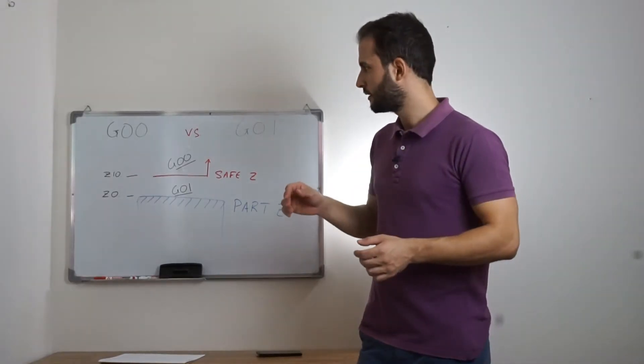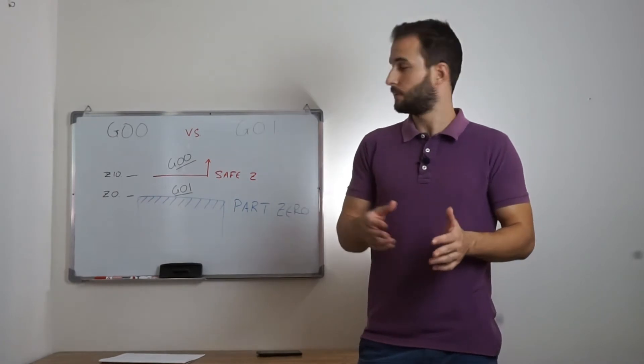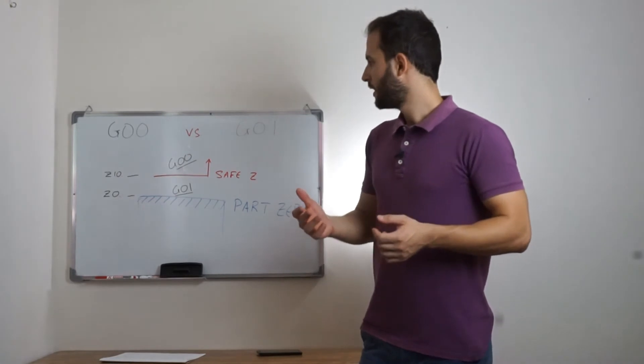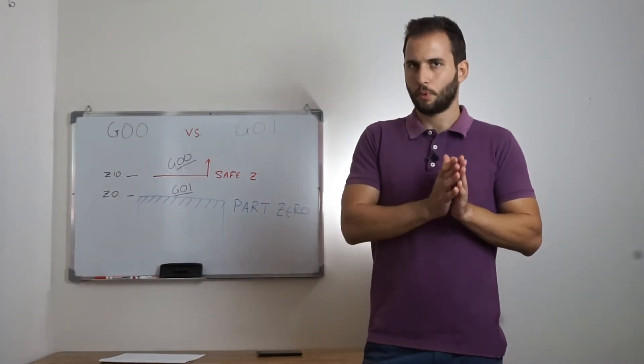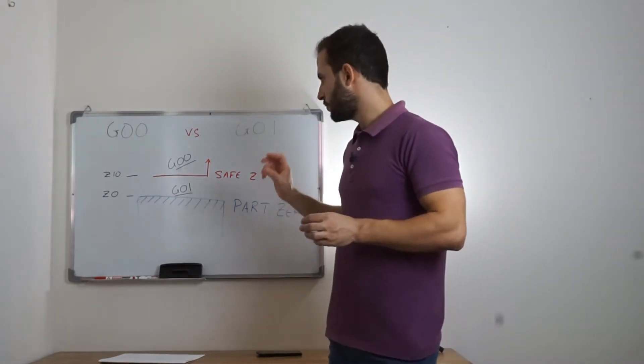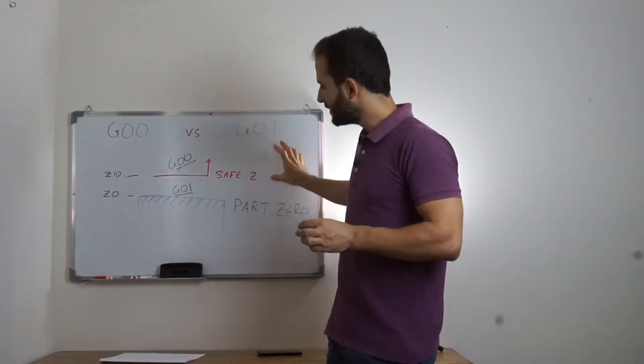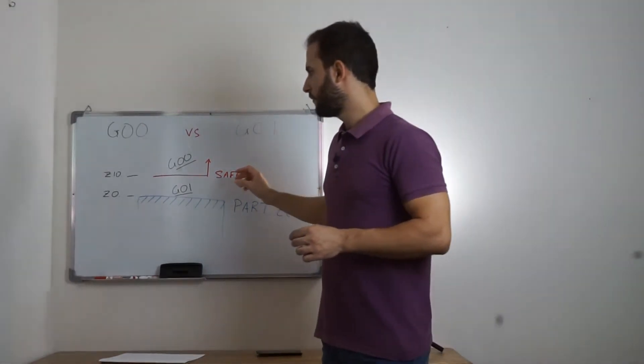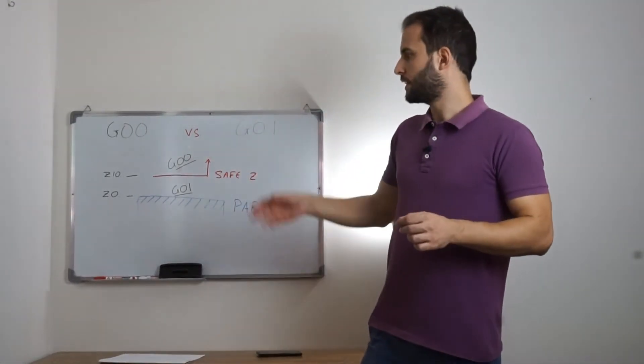Thus, given that the result of the movement when we program G0 is actually not very intuitive, not very predictable, the best way to program a machining task is to define a safe Z level. For example, my personal choice is 10 mm.